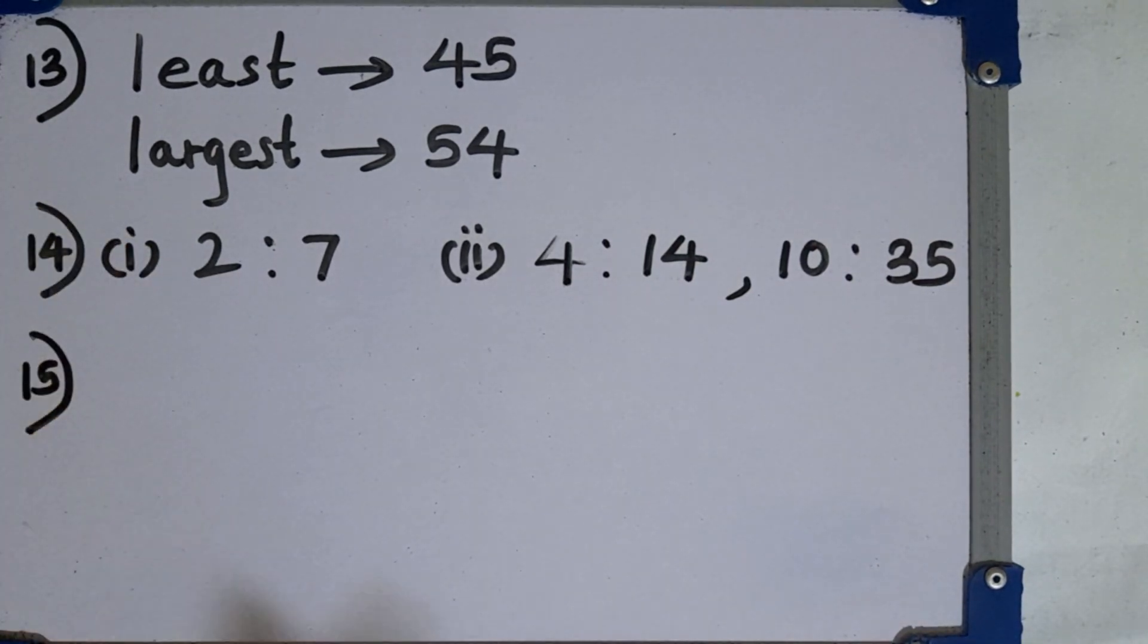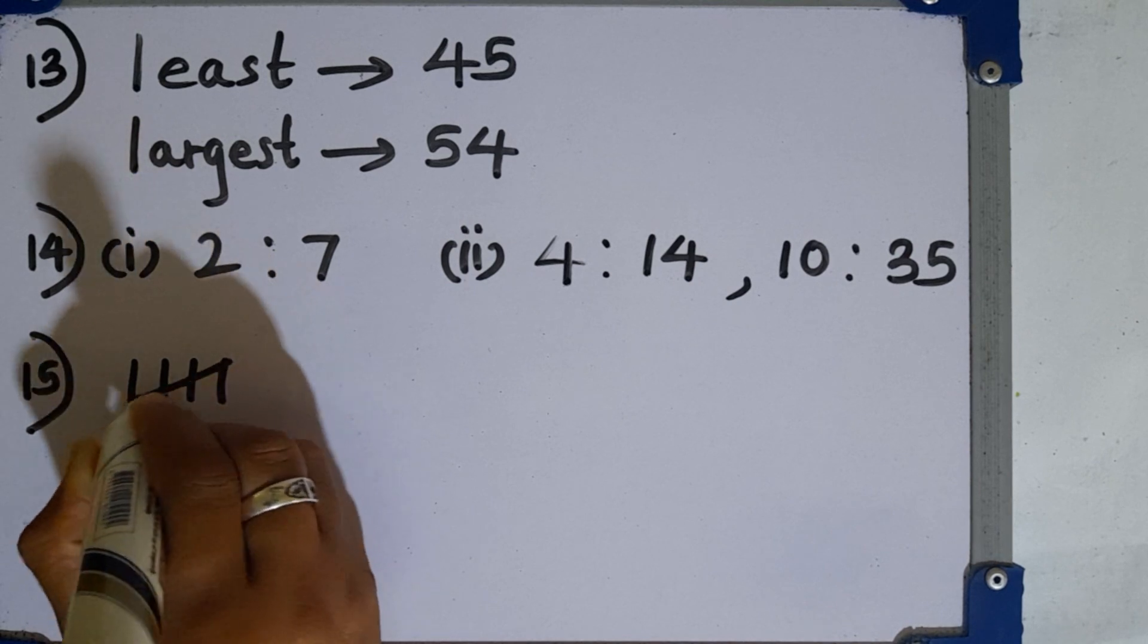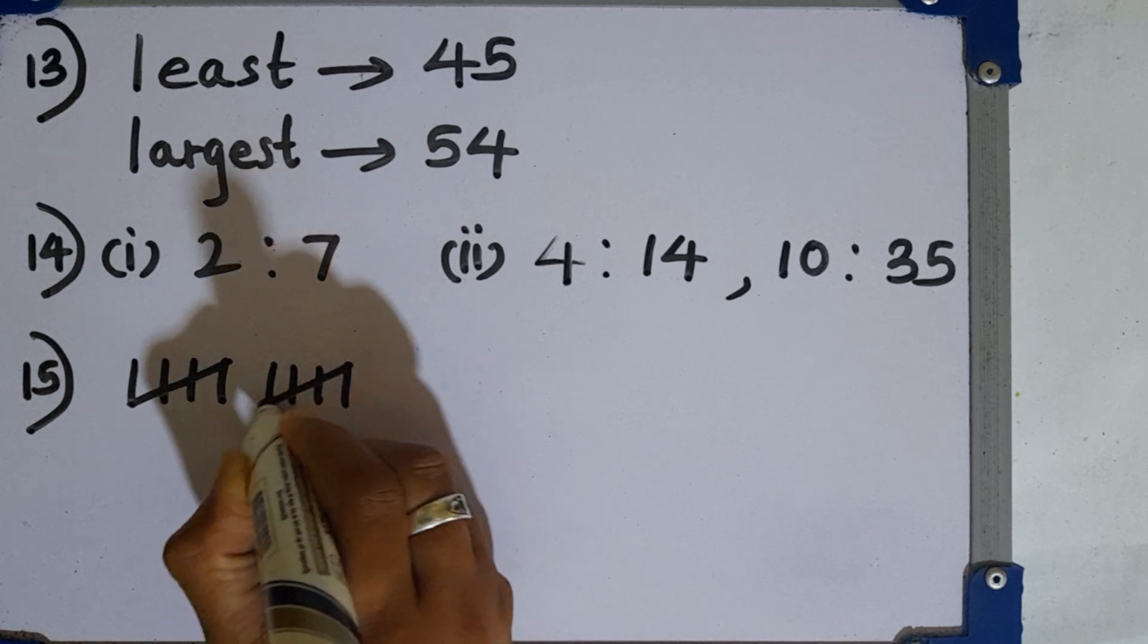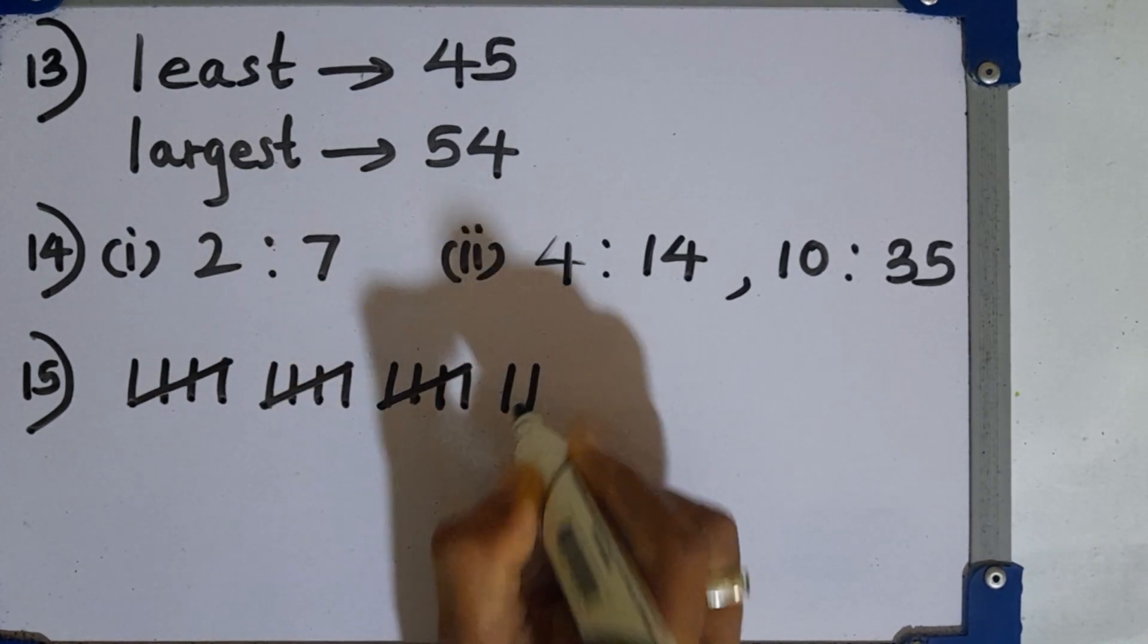Question number 15. Write 17 using tally marks. We can represent like this. This is 5 heaps then it represents 10 then 15 again 2 is remaining.